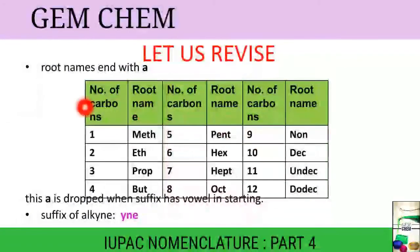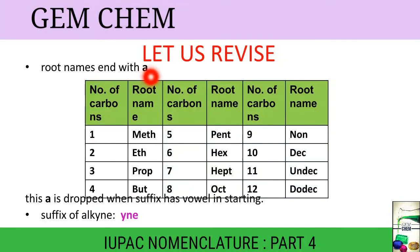Now see, we know root names end with 'a': Meth-a, Eth-a, Prop-a, But-a, Pent-a, Hex-a, Hept-a, Oct-a, Non-a, Dec-a, Undec-a, Dodec-a. This 'a' is dropped when the suffix has a vowel in the starting, just like for alkyne it is 'yne'. So when we use, suppose Meth-a and yne, this 'a' gets dropped.